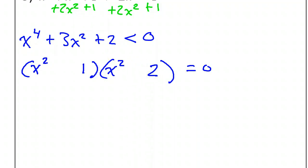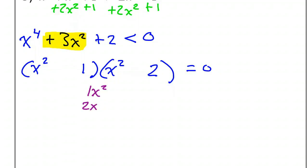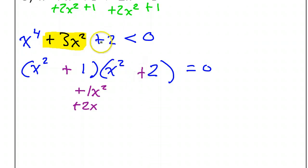The inner plus outer has to give you the middle. Right now the inner term is 1x squared and the outer is 2x squared. The middle we're shooting for is positive 3x squared, and if both signs are positive, that gives us positive 3x squared. Positive 1 times positive 2 is positive 2, so this is a correct factorization.